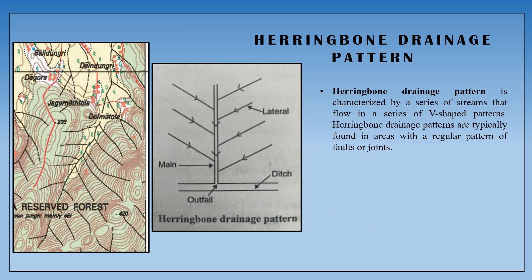Next, the Herringbone Drainage Pattern. In this pattern, the tributary streams join the main stream at the lateral part. The V-shape value is formed where the mainstream and tributary meet, creating the Herringbone Drainage Pattern.